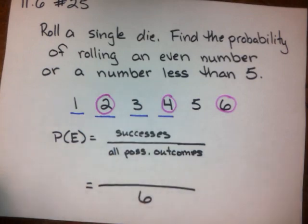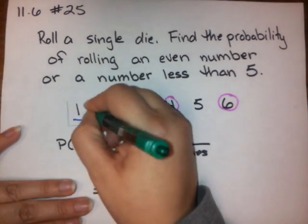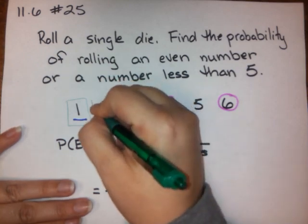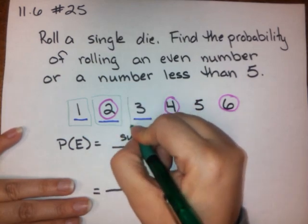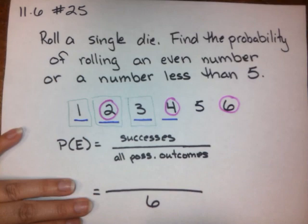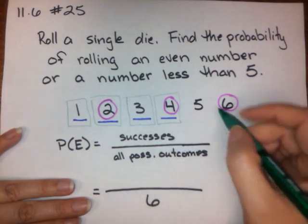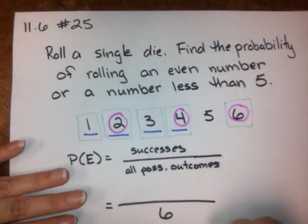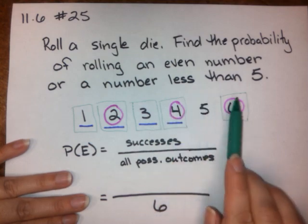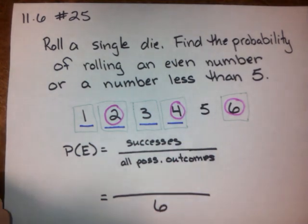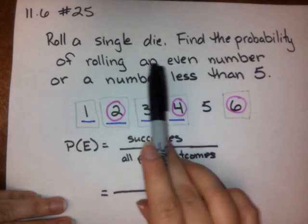I'm going to put a green box around everything that is a success. 1 would be a success because it's less than 5. 2 would be a success, both because it's even and because it's less than 5. 3 would be a success because it's less than 5. 4 would be a success because it's less than 5 and it's even. And finally, 6 would be a success because 6 is even. So how many successes do we really have? 1, 2, 3, 4, 5 — there are 5 successes out of all of those possible outcomes.